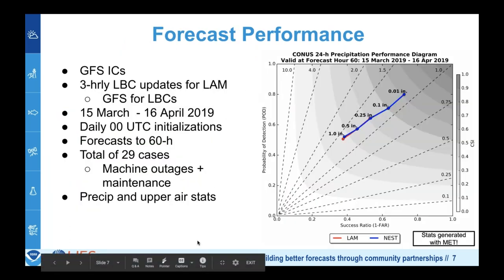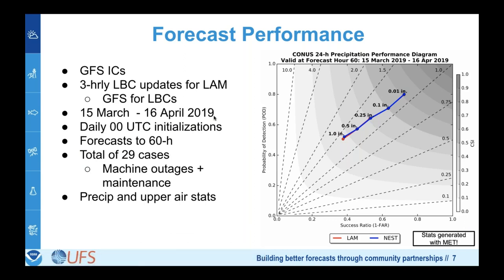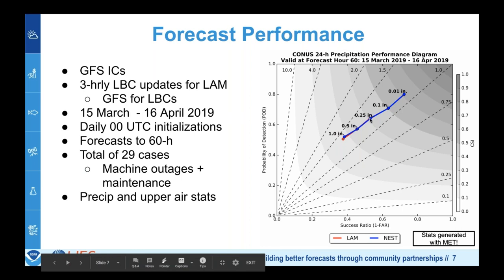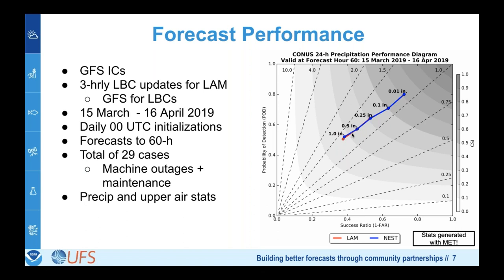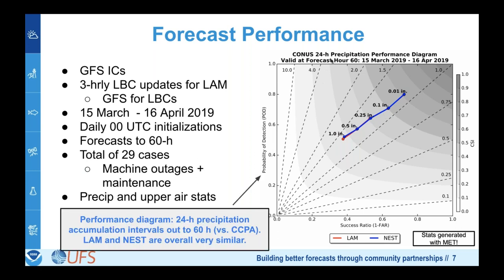We have about a month of cases from spring 2019, all initialized daily at 0Z, forecast out to 60 hours — equivalent to what we do in operations for NAMCON. Looking at precip stats on the performance diagram, the best forecast is in the upper right. The differences between the limited area configuration in red and the nest in blue are relatively small, with some degradation in the limited area configuration, but overall quite similar. This used 24-hour accumulation intervals with CCPA.